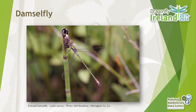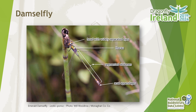The damselfly has a similar anatomy: a head with widely separated eyes, a thorax, a segmented abdomen, and anal appendages. The forewing also has the costa — the leading edge — and pterostigma.